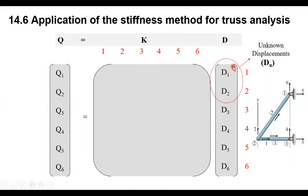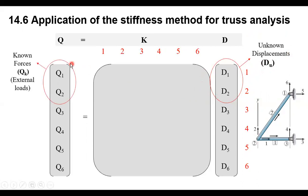We always start numbering with lower numbers for unknown displacements. For example, at node number two, degree of freedom number one and degree of freedom number two have unknown displacements — we call them DU. If you have two unknown displacements, you will have on the force side two known forces. The number of known forces equals the number of unknown displacements. So if D1 and D2 are unknown, then Q1 and Q2 will be known — meaning there are external loads at those degrees of freedom, which could be any value or zero.